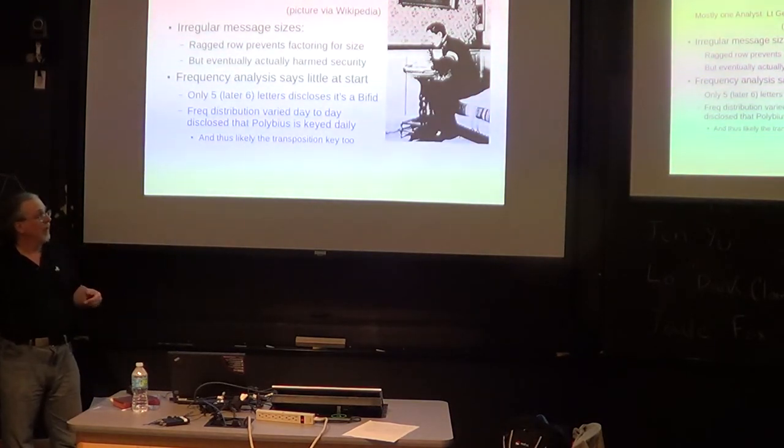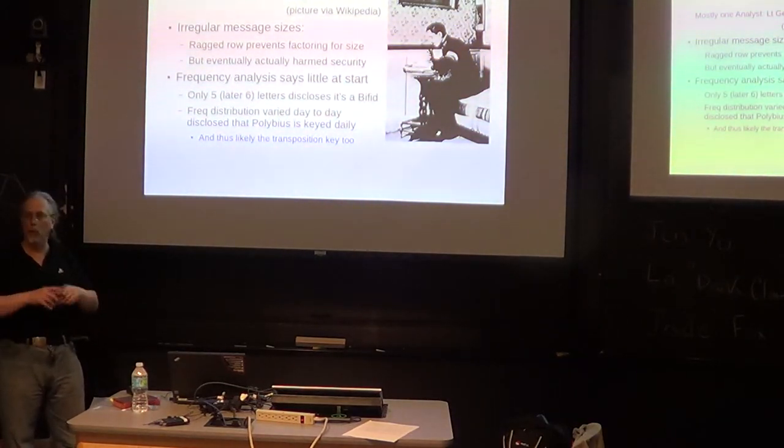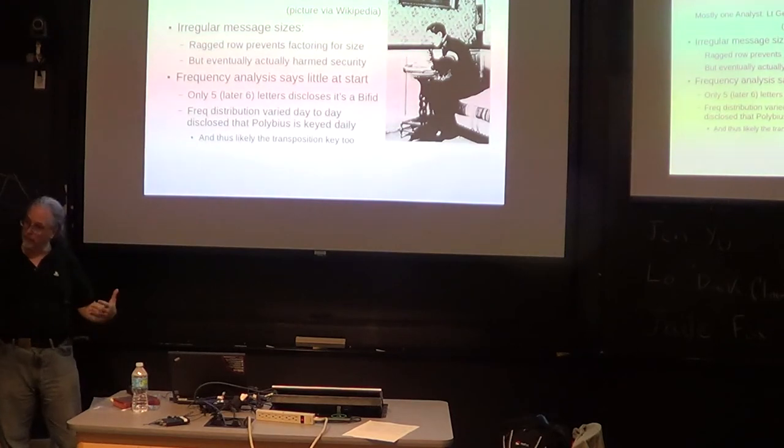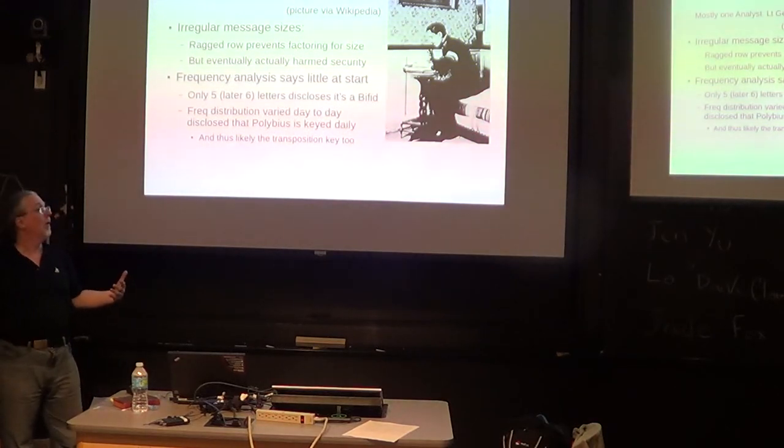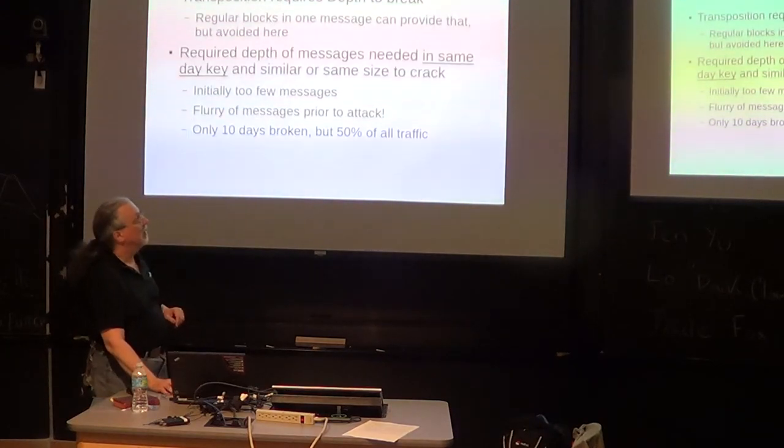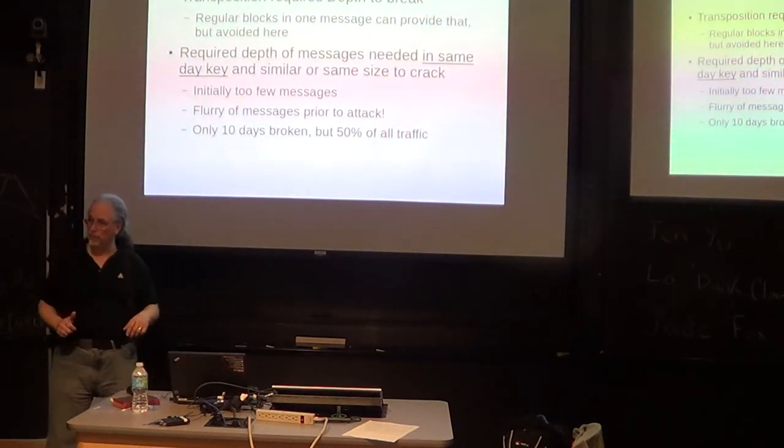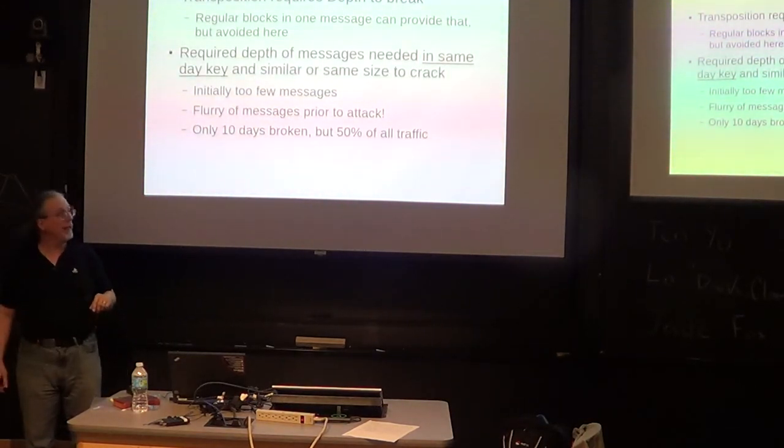So immediately he notices there are only five letters involved. Okay so it's got to be a bifid, which is to say a one to two expansion matrix sort of thing. The frequency distribution varied from day to day, therefore they're using daily keys. That suggests that maybe the transposition key changes daily also. So that we're going to have to, in order to get a depth, we have to get multiple messages from the same day. So that's what he did. He had all the radio intercept stations send him any message that only consisted of those letters.